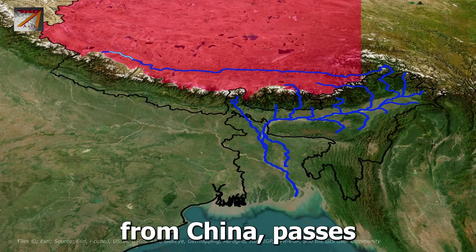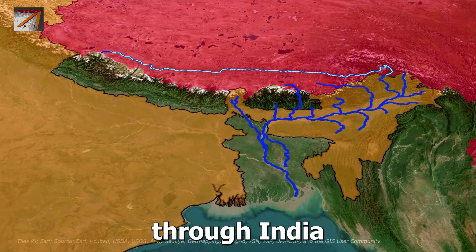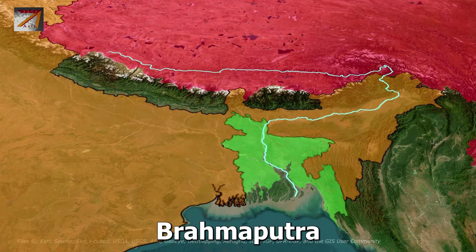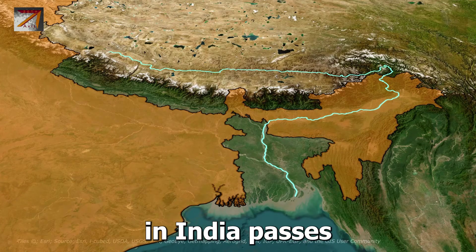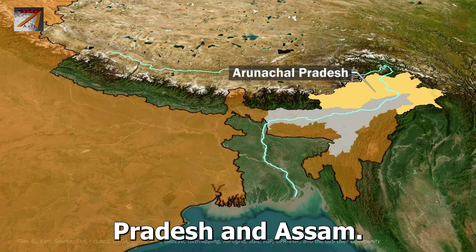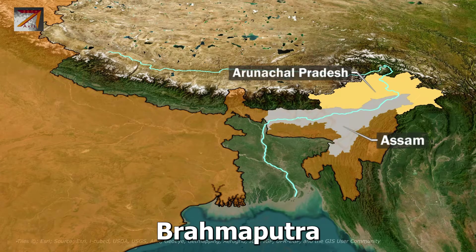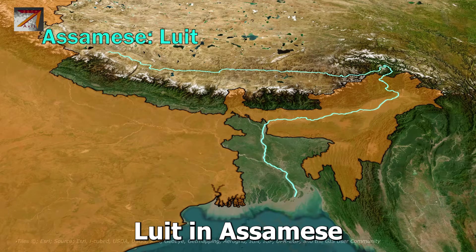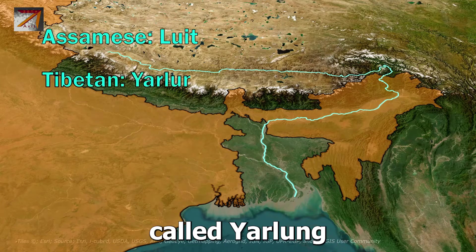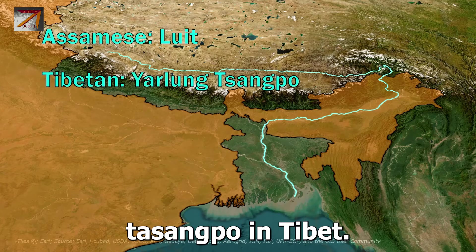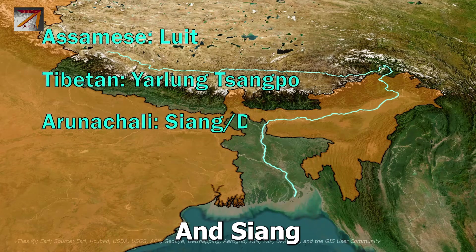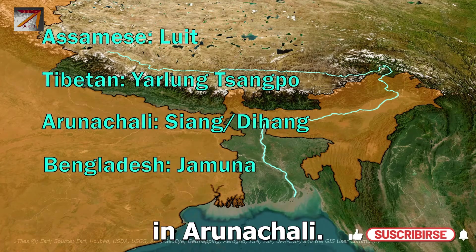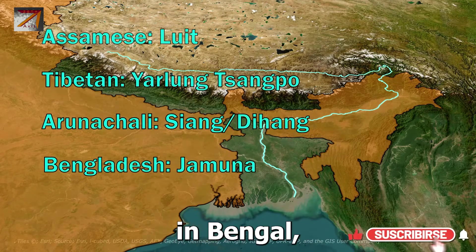It starts from China, passes through India, and then finally enters Bangladesh. Brahmaputra in India passes through Arunachal Pradesh and Assam. It is known as Brahmaputra or Luit in Assamese language, called Yarlung Tsangpo in Tibet, Siyang or Dihang River in Arunachal, and Jamuna River in Bengal.